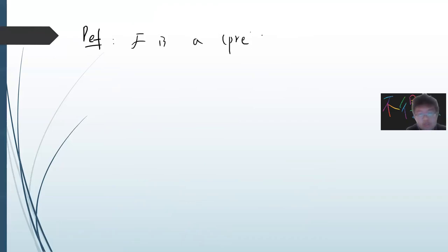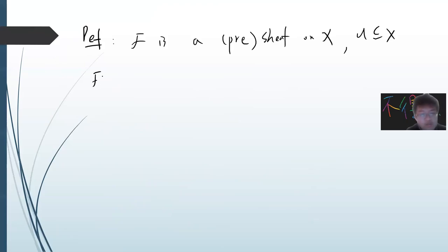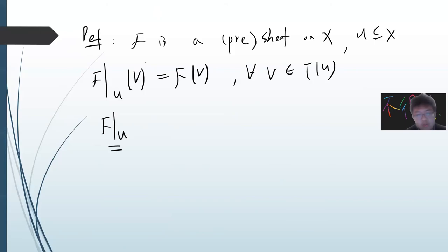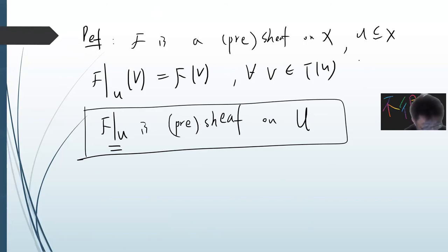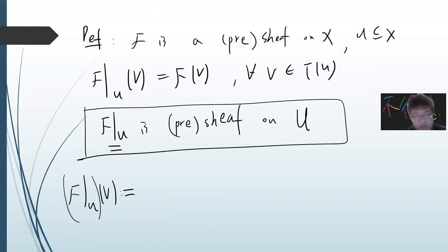Another definition: given a pre-sheaf or sheaf F and an open set U, you can define the restriction sheaf F|_U by setting F|_U(V) = F(V) for any V open in U. The restriction map F_{UV} is basically just the restriction map from U into V, giving a pre-sheaf or sheaf on U.